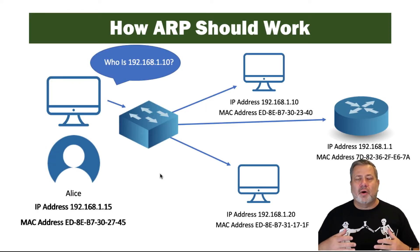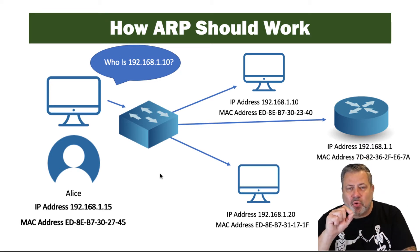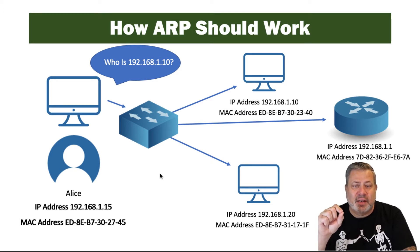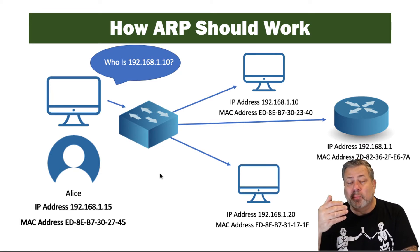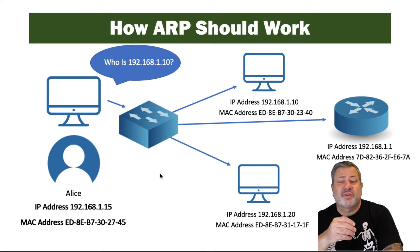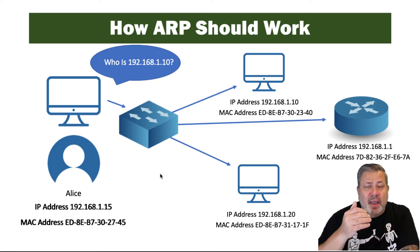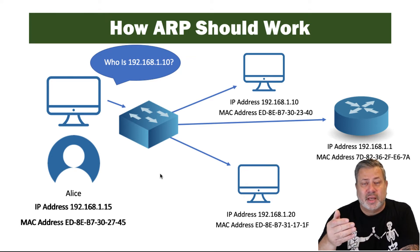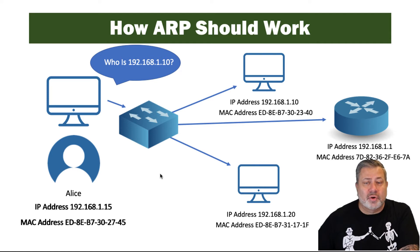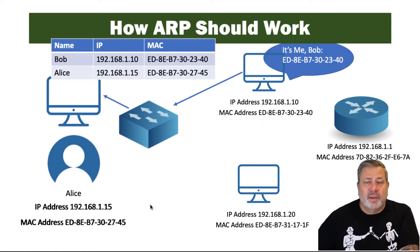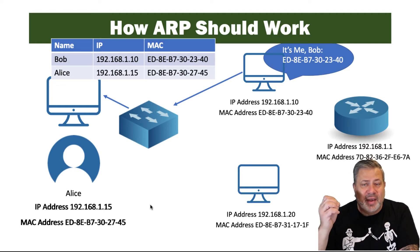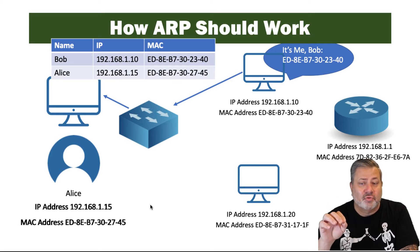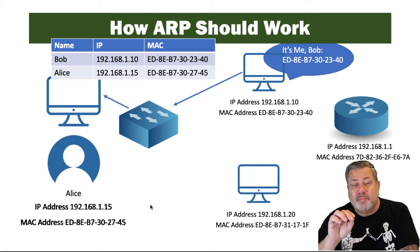What ARP should look like is: if Alice is trying to talk to the computer at address 192.168.1.10, her computer will broadcast a request to the network asking who has this IP address. It may be resolved at the local computer, or it may go to the first switch it encounters to check for that address, asking the switch to check its ARP table for who has 192.168.1.10. If the switch doesn't know, it'll broadcast that forward looking for an answer. When it finally gets to the computer with that IP address, that computer will respond with its MAC address.